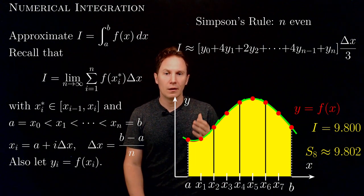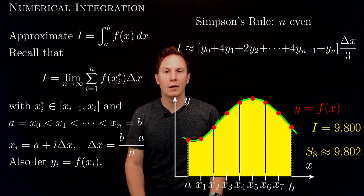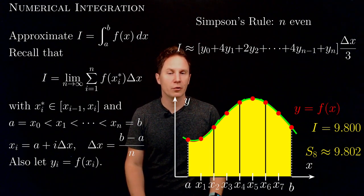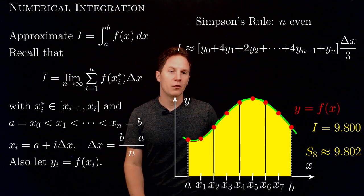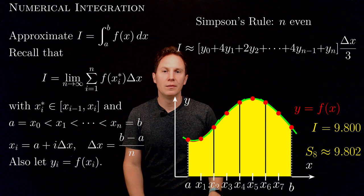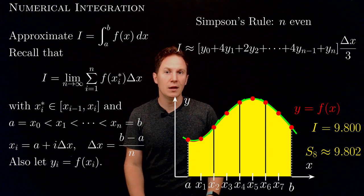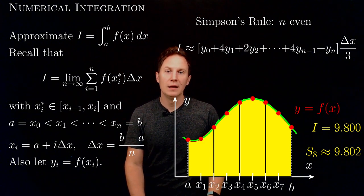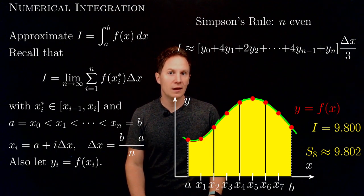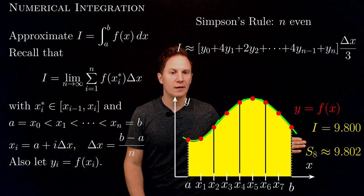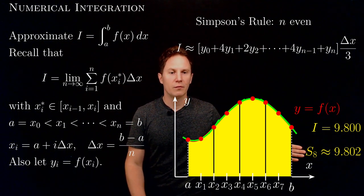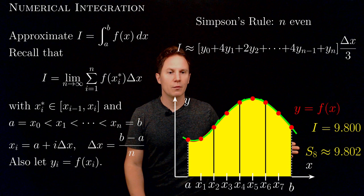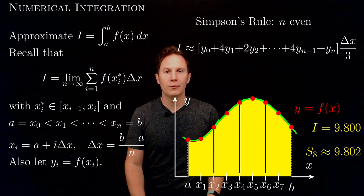Simpson's rule is the best out of all the approximations shown so far, because doubling the number of subintervals in each step leads to a decrease in the error by a factor of 16 — that is 2 to the 4. That's why this approximation, with 8 subintervals, is so far the best we've seen.